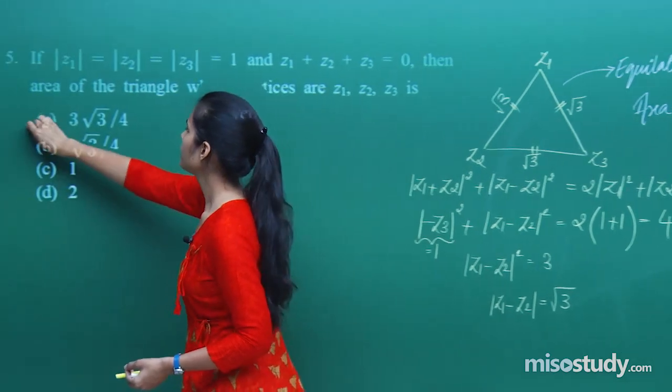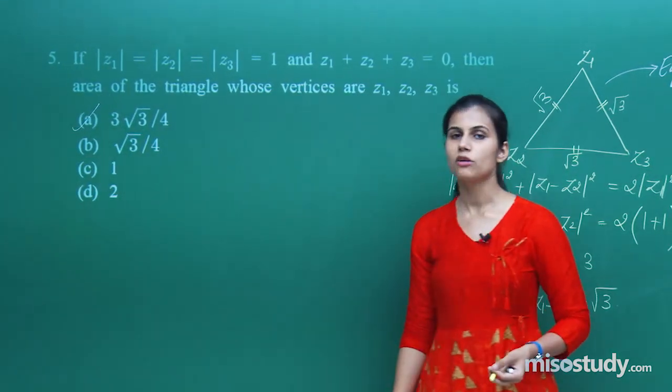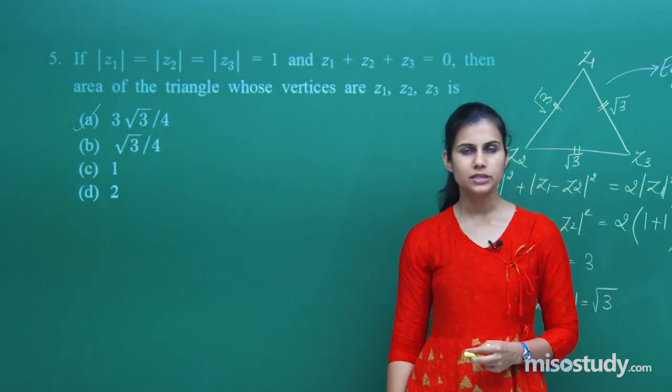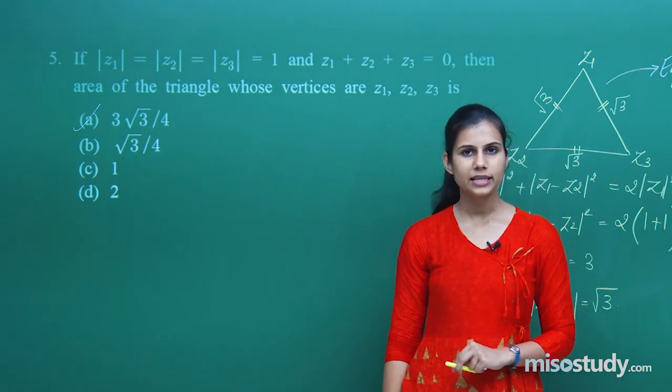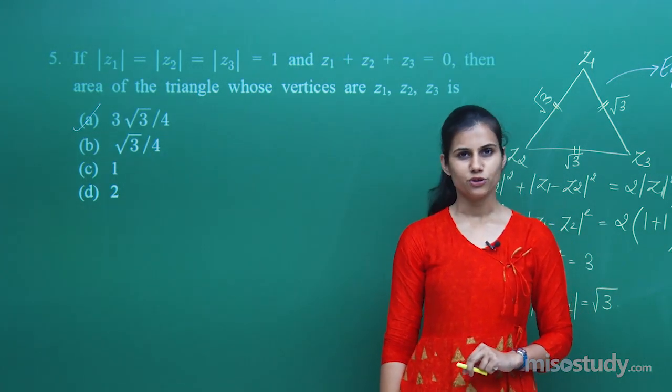3 root 3 by 4 comes out to be the area, and that is how you deal with questions in complex numbers. Practice them nicely. That is it from my side. Thank you.